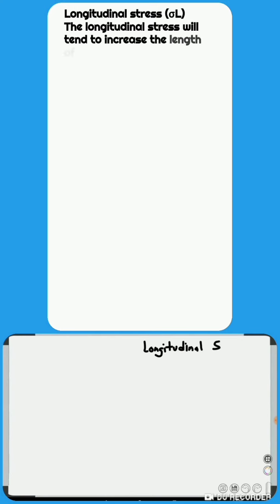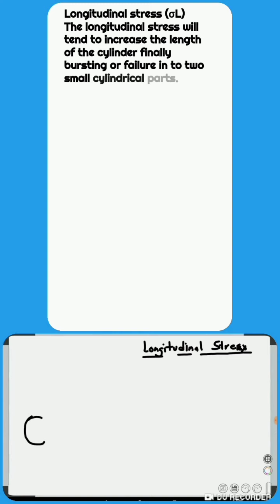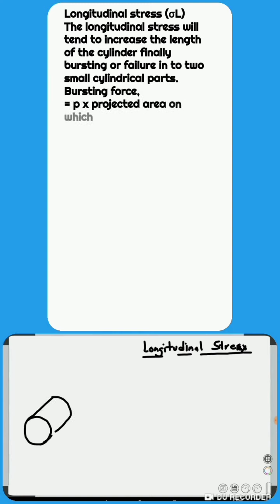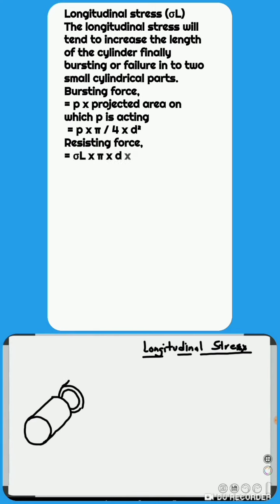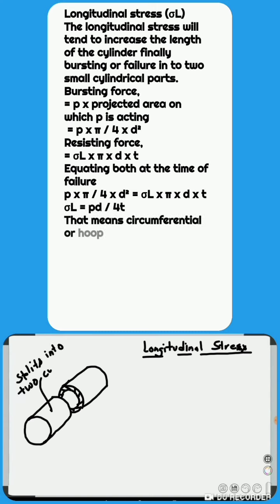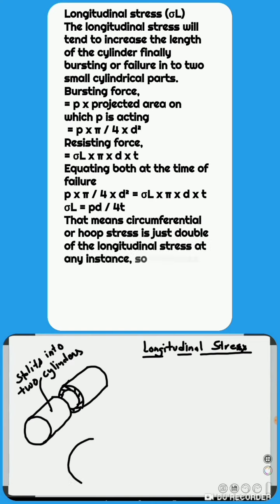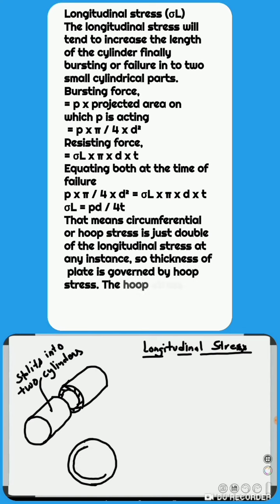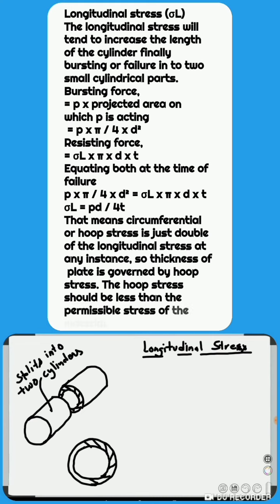Now we will discuss the second type of internal stress, named as longitudinal stress, Sigma L. The longitudinal stress will tend to increase the length of the cylinder, finally bursting it into two smaller cylindrical parts. Bursting will take place if the force due to fluid pressure is more than the resisting force due to intermolecular forces along the area of the critical section of failure, as shown in the figure. Bursting force equals internal pressure P into the projected area on which P is acting: P into pi by 4 into D squared, where the projected area is a circle of diameter D.